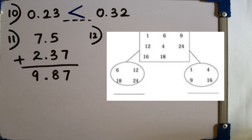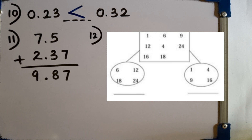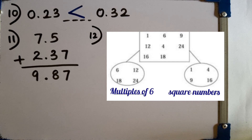Question number 12: the following numbers are separated into two groups based on their common properties. Write a suitable name for each group. You can name one group as multiples of 6 and the other as square numbers.